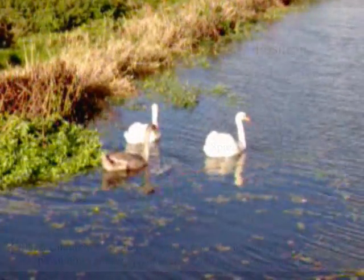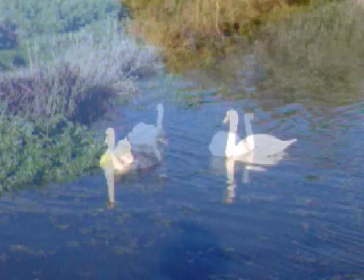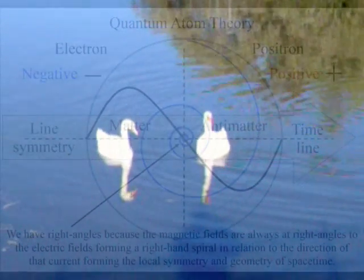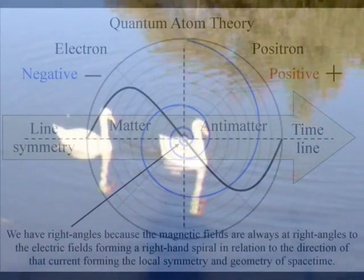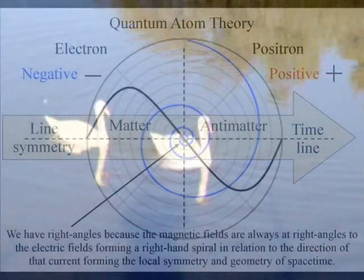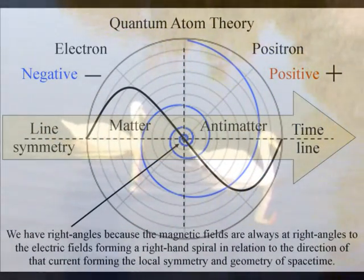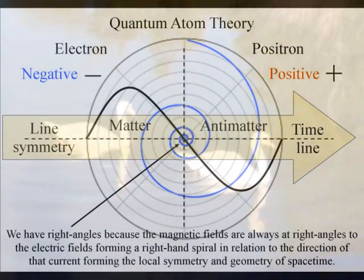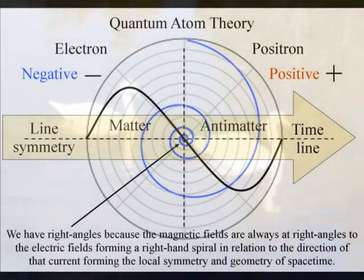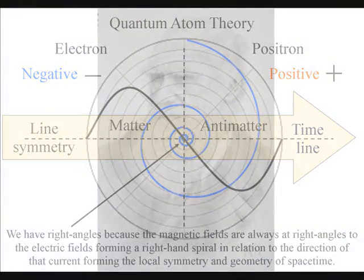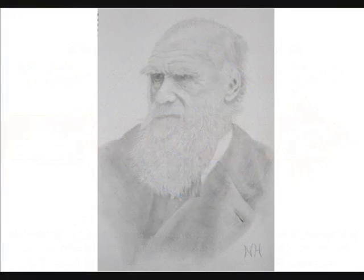This forms an infinity of possibilities within the evolutionary process for each life form. In this theory, all life has a common geometry formed by the geometry of space-time. This forms a mathematical base for Charles Darwin's theory of evolution by natural selection.